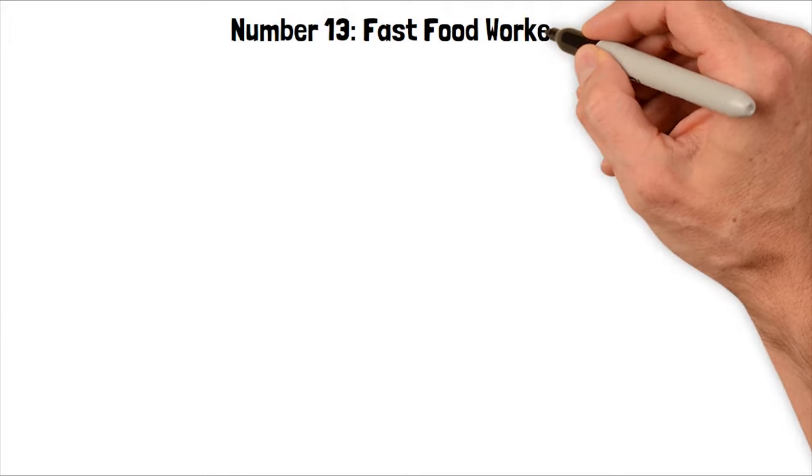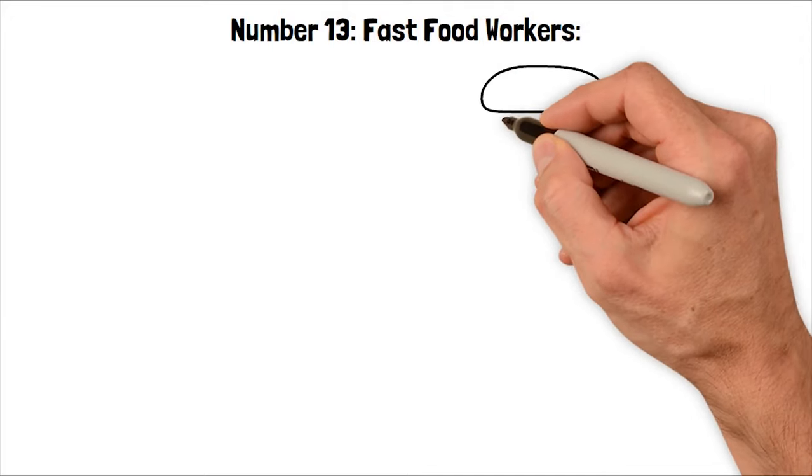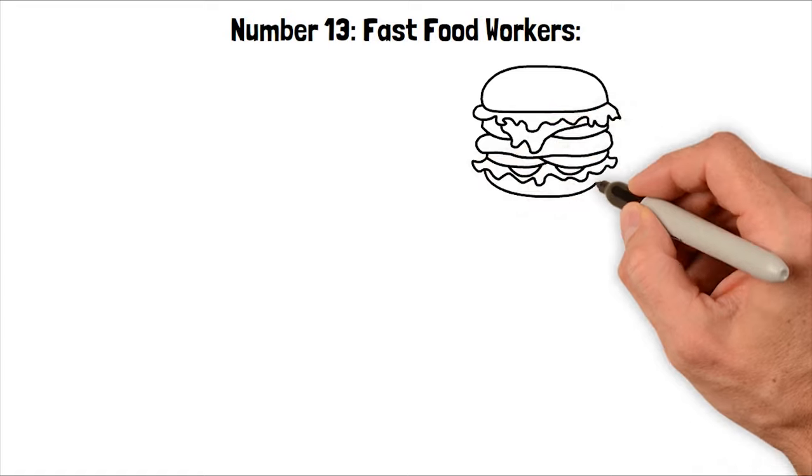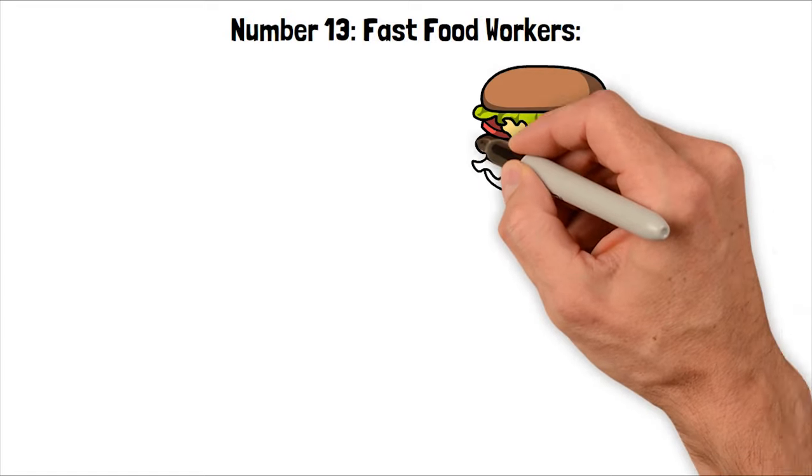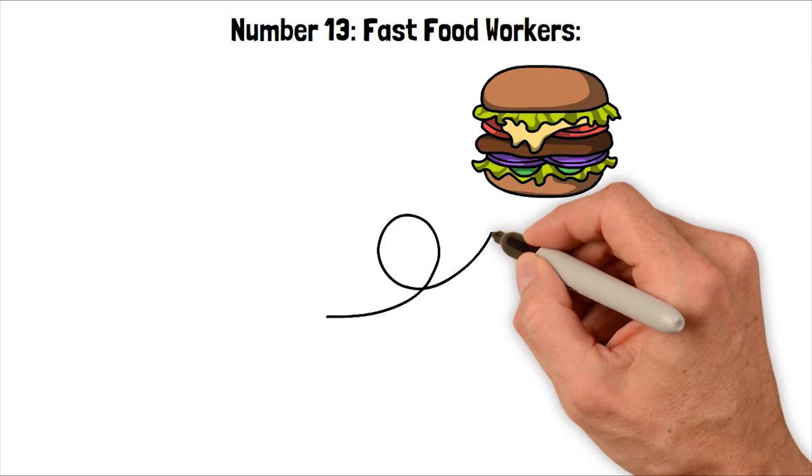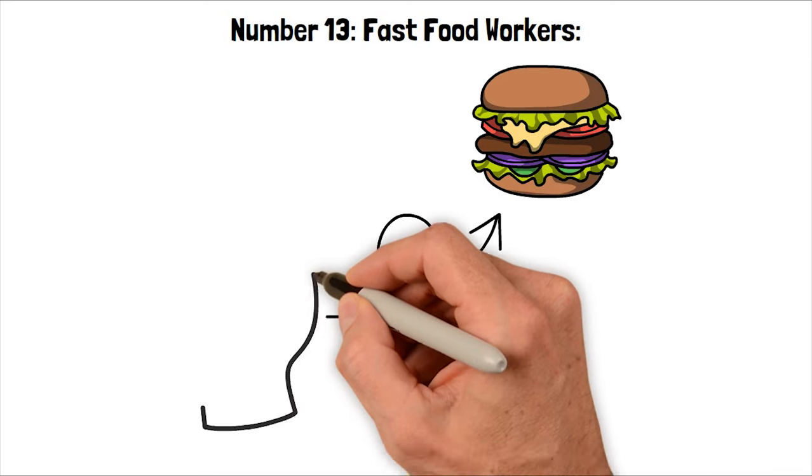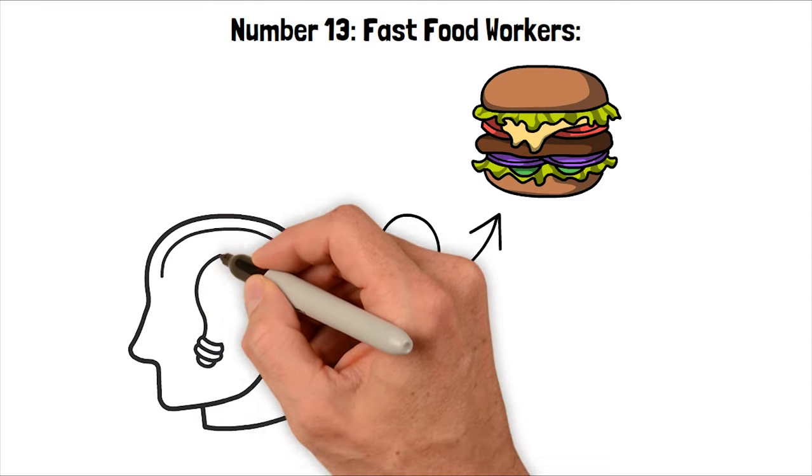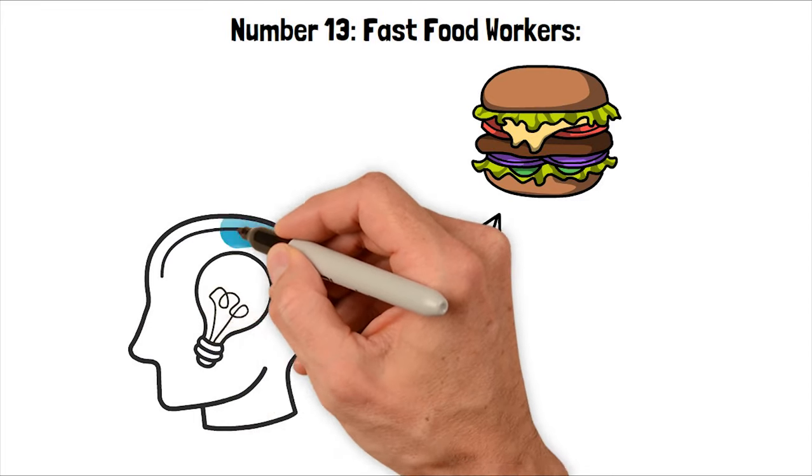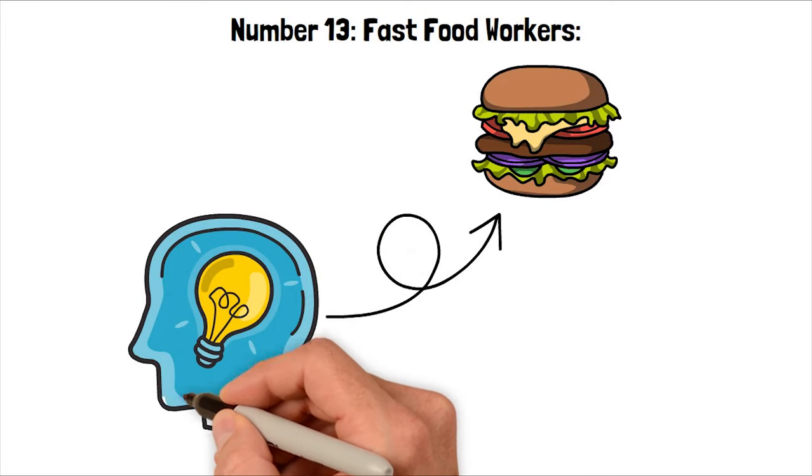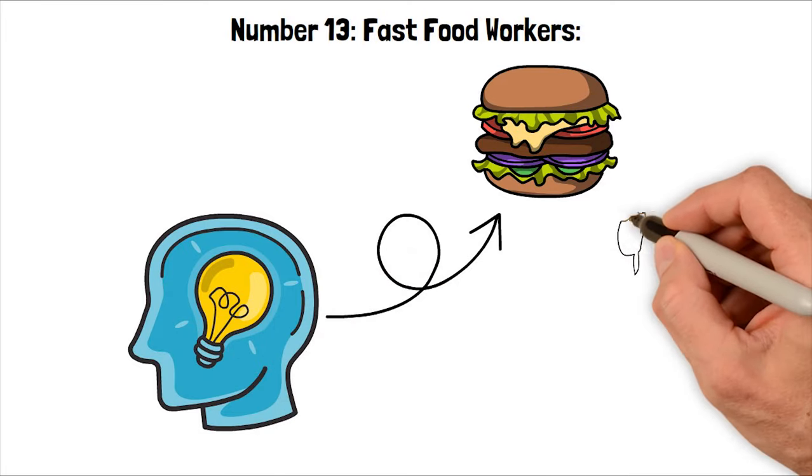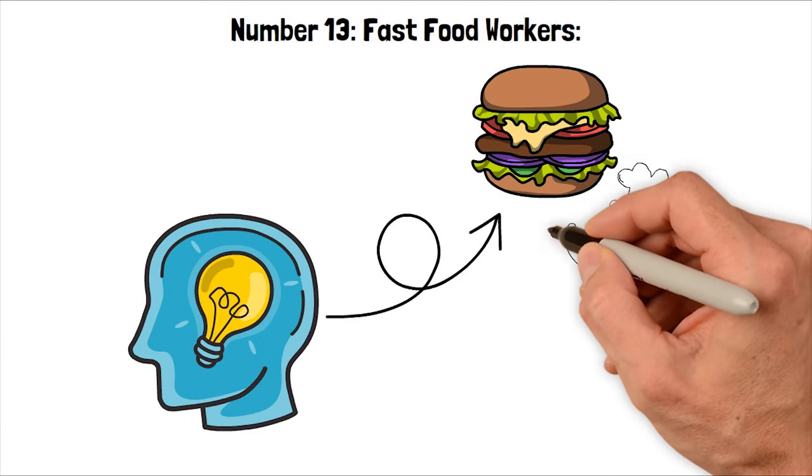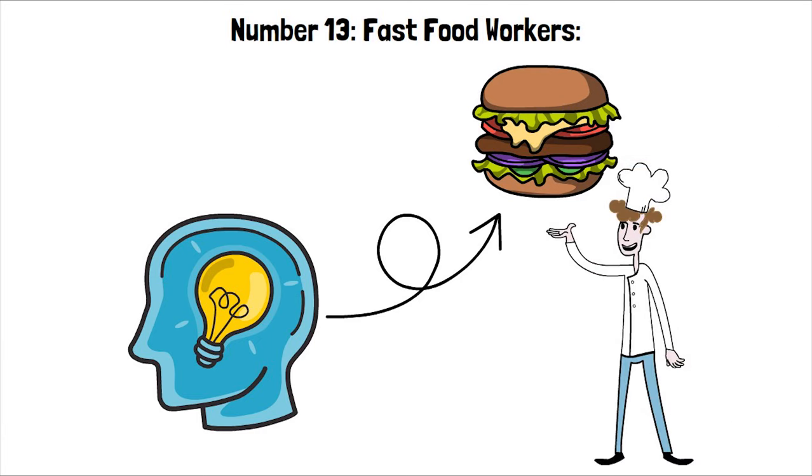Number 13. Fast Food Workers. Fast food workers are changing as automation and robotics take over tasks like order-taking and food preparation. This technology, driven by AI, raises concerns about job loss, but it also offers new opportunities for workers. They can focus on roles that require creativity, problem-solving, and customer service. So while automation may reduce the need for some jobs, skilled workers remain crucial for delivering quality service in the fast food industry.